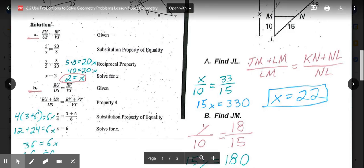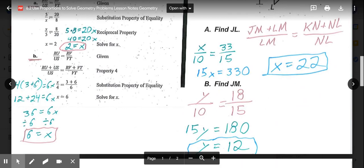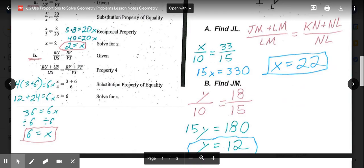In this case, 4 times the 3 plus 6 is 36, which is the same as 4 times 9. And then that would equal 6X. So 36 equals 6X. Divide both sides by 6, and X equals 6.